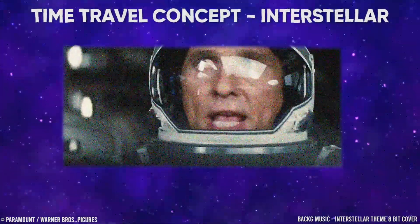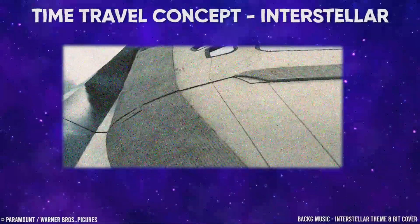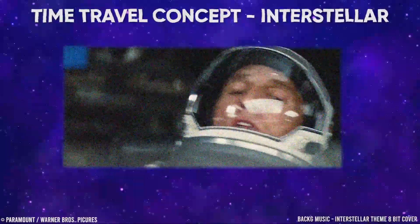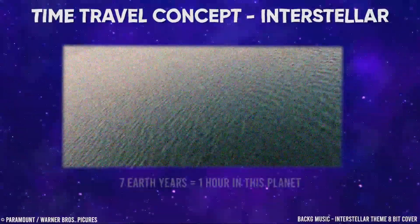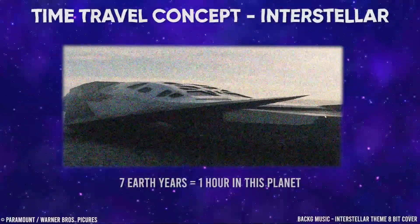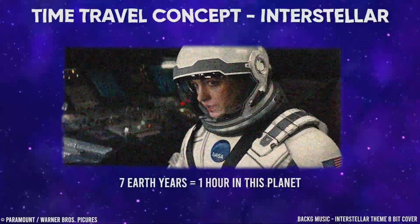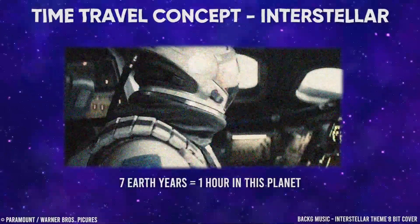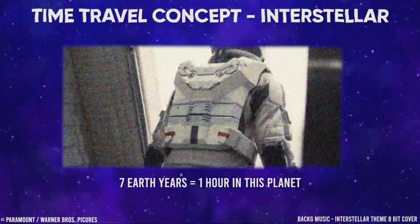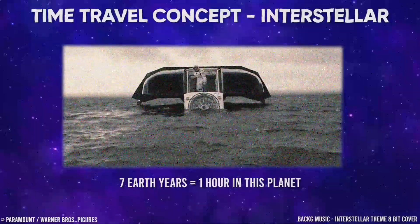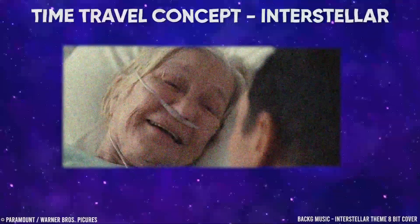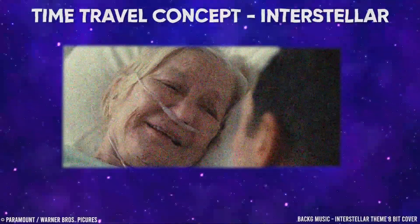The film shows a good example of this phenomenon in the scene of the first planet — the all-water one with the very big tidal wave. For every hour that has passed on that planet, on Earth that hour is equal to 7 years, with the evidence of their third crew member who stayed on the spaceship and waited for 23 years, 4 months, and 8 days. We can also see the effects of time dilation in the ending of the movie.